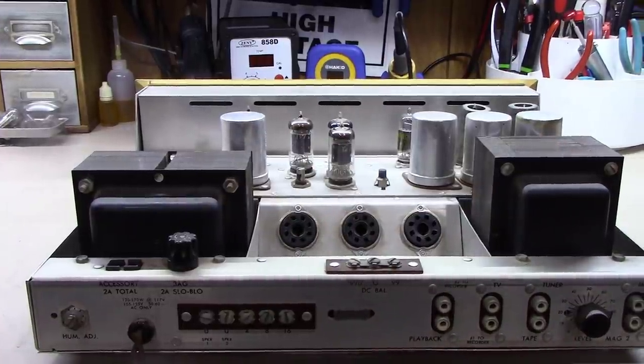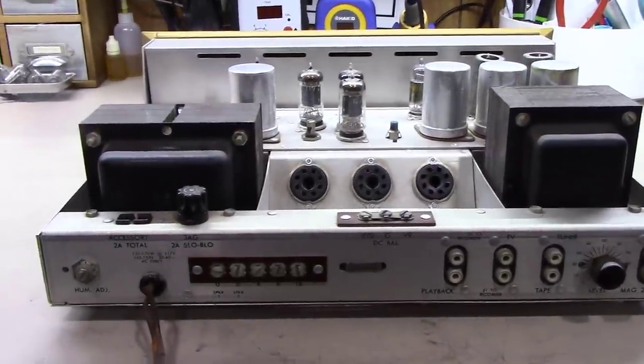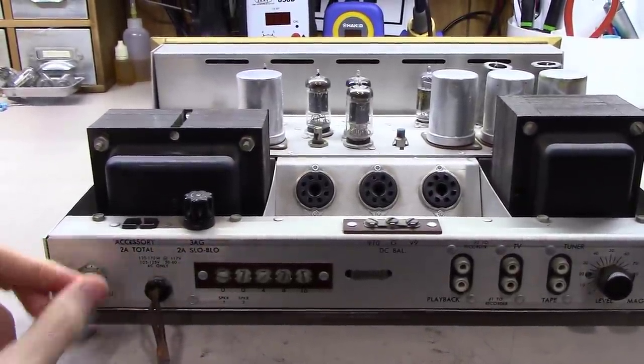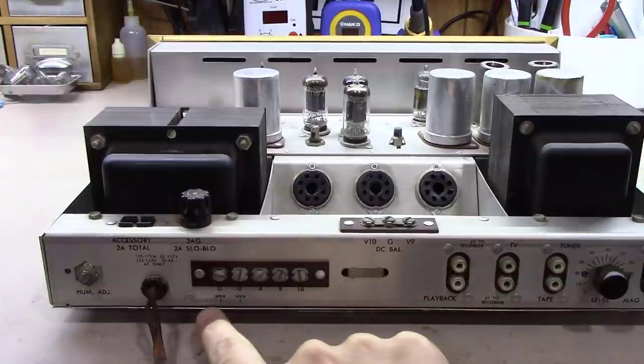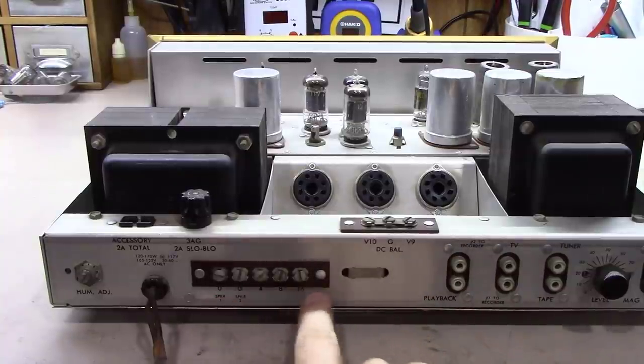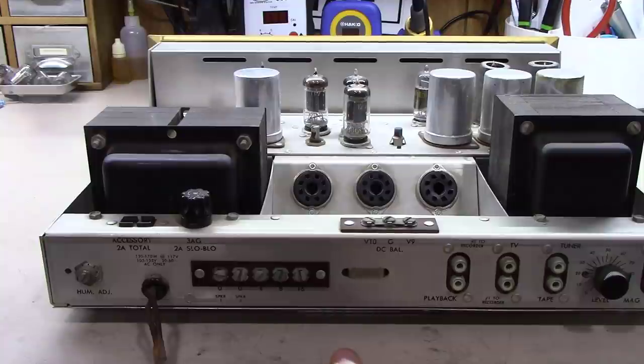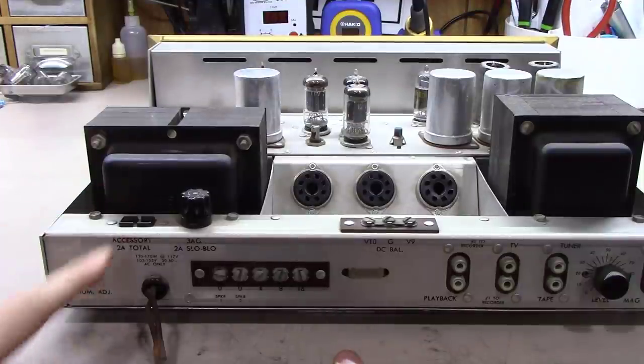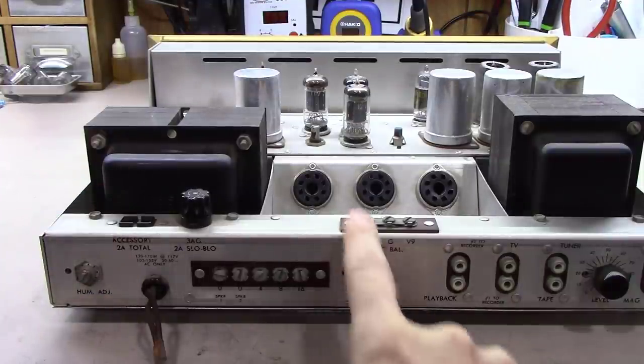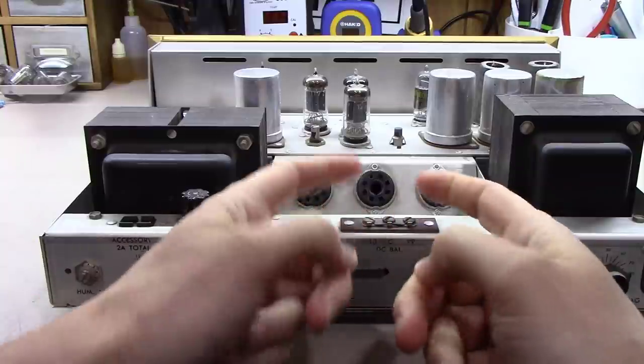And as you can see here on the back of this unit, you've got your power input here, a hum adjust, your speaker output. It's really easy to figure out your connections on the back. You've got three amp slow blow fuse. You've got an accessory jack.